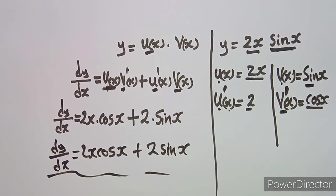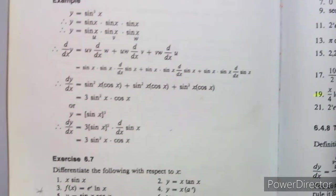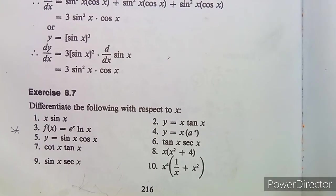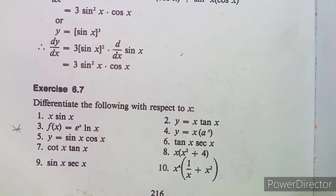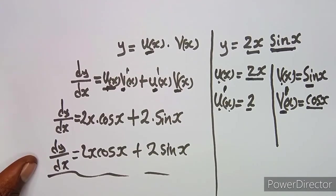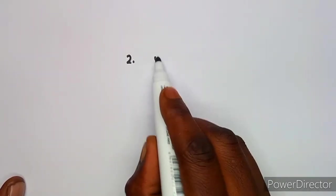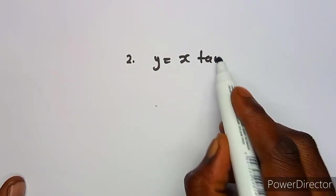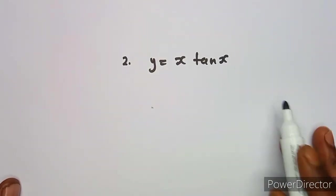There are many contexts where we can apply the product rule. As you can see, we have different types of questions: differentiate the following with respect to X, where the terms are multiplying each other. I'm going to take one or two of these questions. Let's take question number two, where we are given that y = x·tan(x). These two terms are multiplying each other, as we can see.